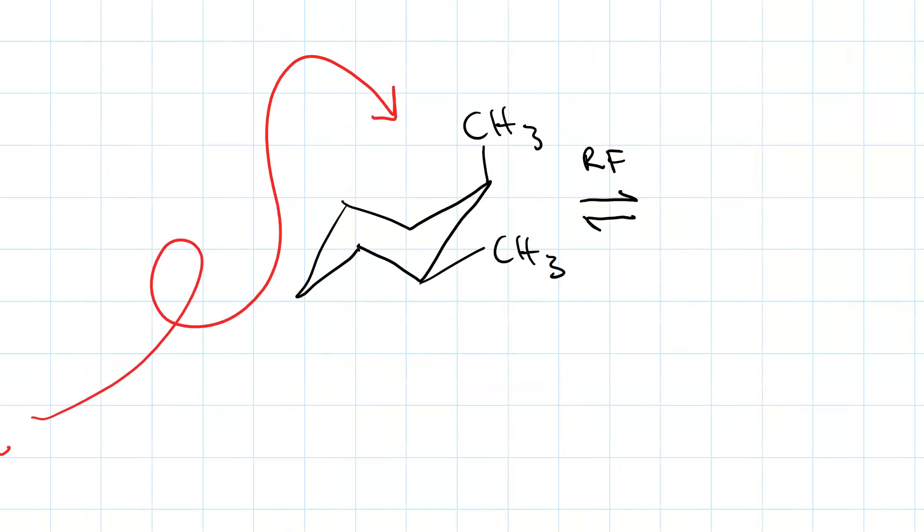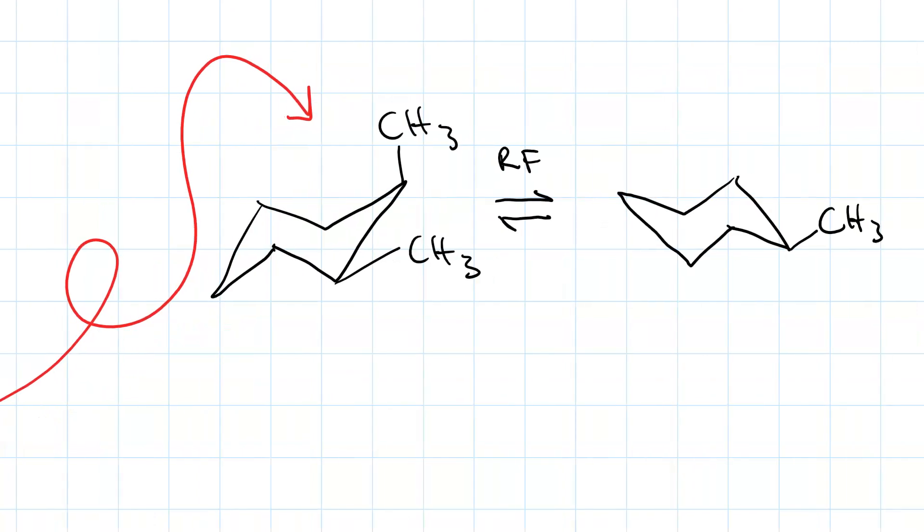So, there's one of them. Here's the other. So, let's see. The one on the left has an axial and an equatorial. The one on the right has an equatorial and an axial. These are equally as stable as each other.